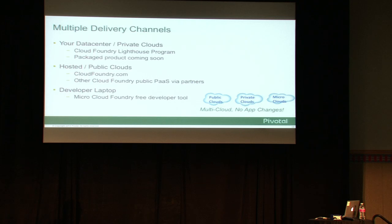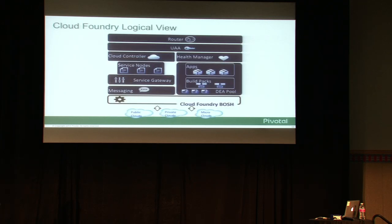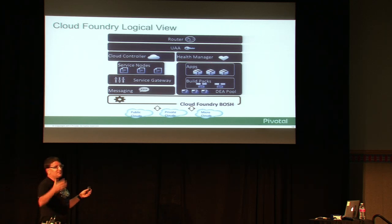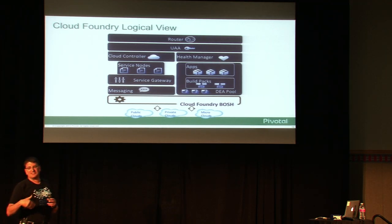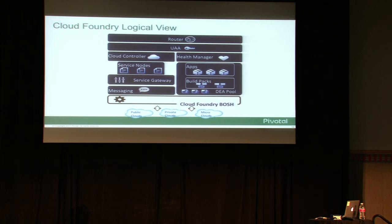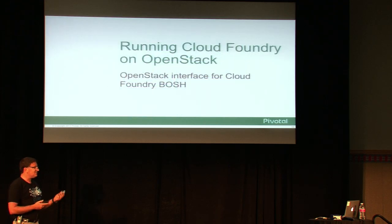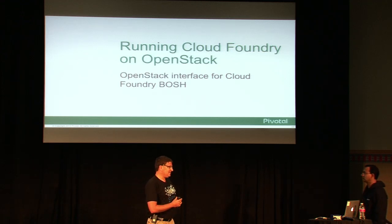This is the Cloud Foundry logical view. It has routers so we handle load balancing your app — when you add an instance, we update the DNS. We have authentication mechanisms and a health manager. If you scale a Cloud Foundry app to 20 or even 1,200 instances as one recent customer did, we automatically update the load balancer. If one instance fails, we automatically restart another to maintain your SLA. All of this sits on top of Cloud Foundry BOSH, which allows us to be portable across environments.